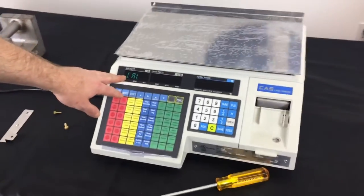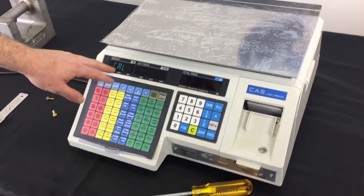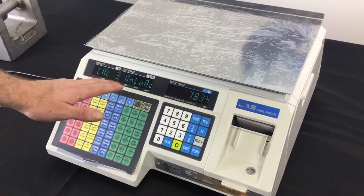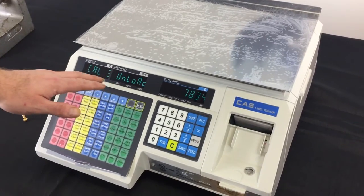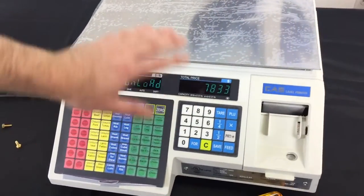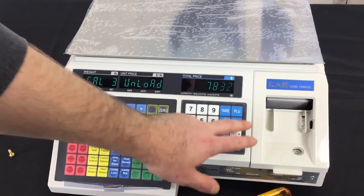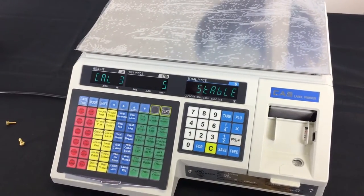It'll go directly into Cal mode. Now that we're in Cal mode, we're gonna press the number three key. This is your zero calibration; it will say unload on the top of the scale. Now with no weight on the platter, press the print key in order to do your zero calibration.